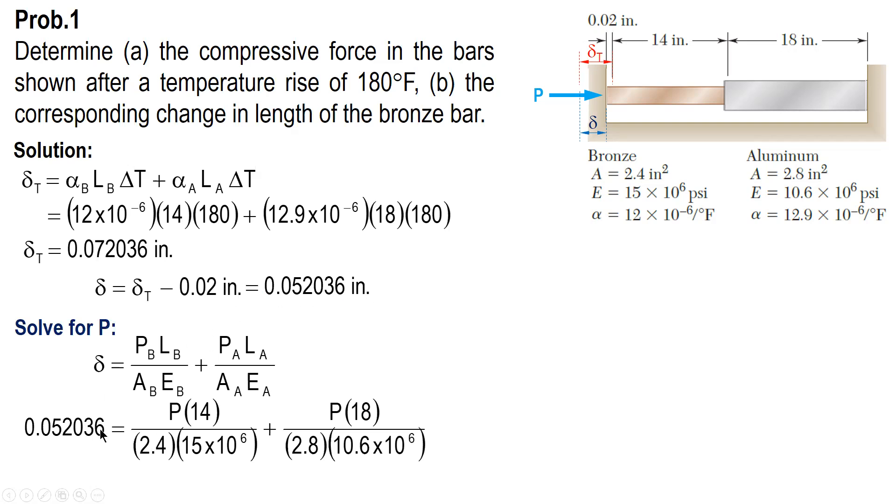The unit of P and A must cancel with the unit of L. P should be in pounds. Area in square inches. And E is in PSI. Pounds per square inch, pounds per square inch will cancel. And since the unit of delta is inches, length must also be in inches.